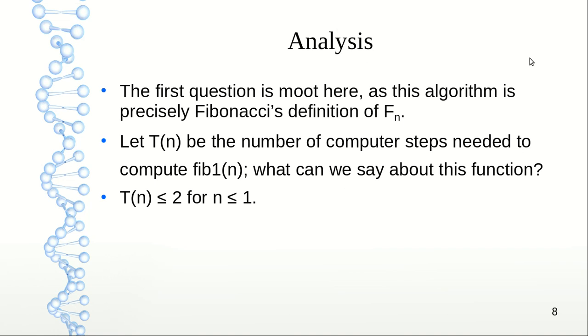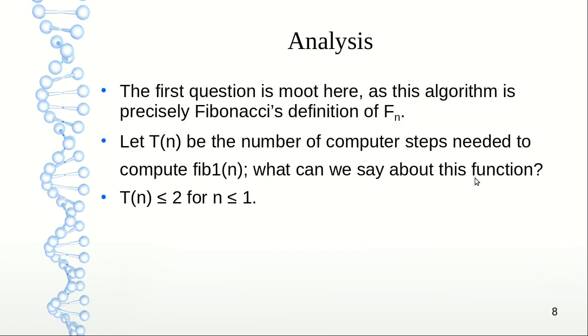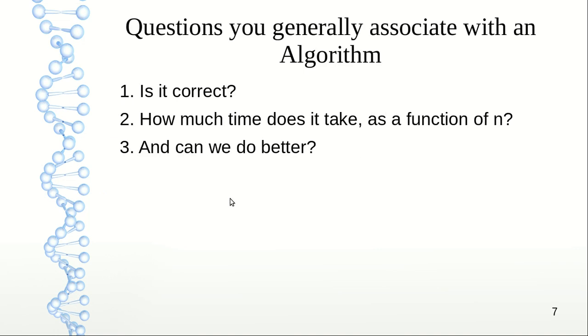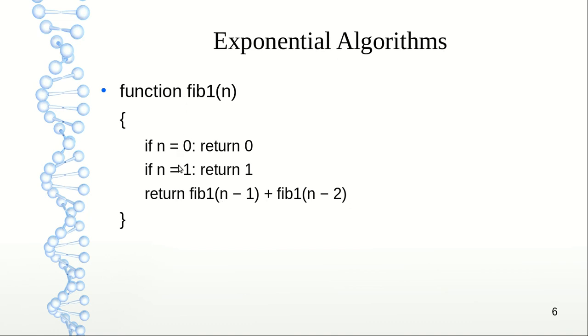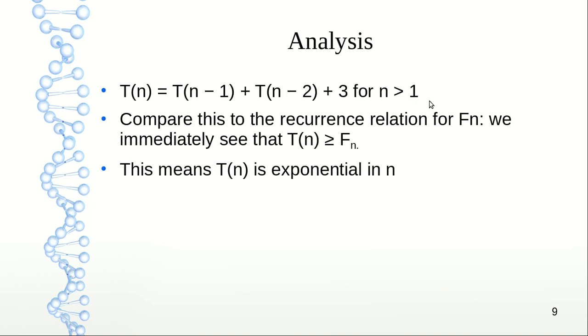The first question is quite moot here as the algorithm is precisely Fibonacci's definition of fn. Then let Tn be the number of computer steps needed to compute fib1, which is this algorithm. So what can we say about this function Tn? Clearly, Tn is less than or equal to 2 for n less than or equal to 1, as you can see. If n is less than or equal to 1, we will be at most going up to this step—so steps 1 and 2. But what about n greater than 1? You can see Tn equals Tn minus 1 plus Tn minus 2 plus 3.